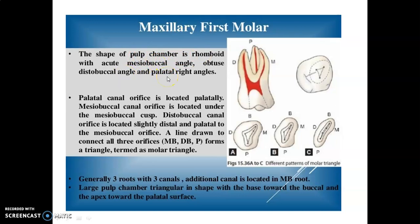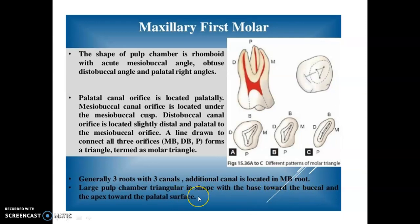The palatal canal is located palatally, mesiobuccal under the mesiobuccal cusp, and distobuccal is located slightly distal and palatal to the mesiobuccal orifice. The molar triangle is the line connecting all three orifices. Most often there are three roots with three canals; the additional canal is MB2. If the pulp chamber is large, it is triangular with the base toward the buccal and apex toward the palatal surface.